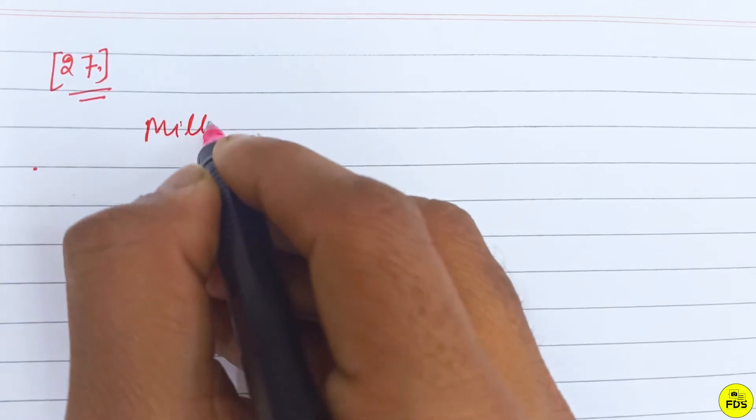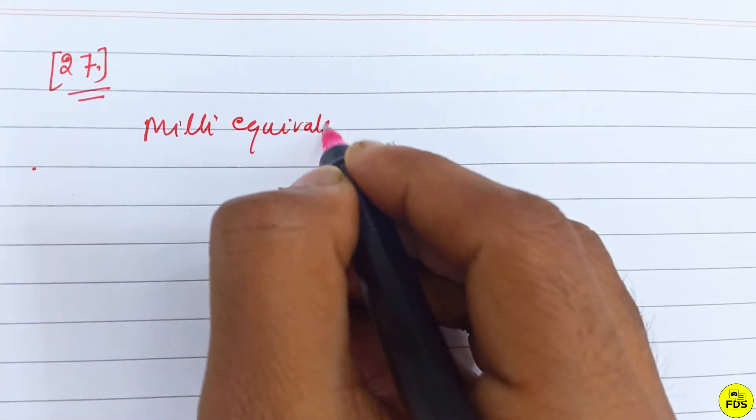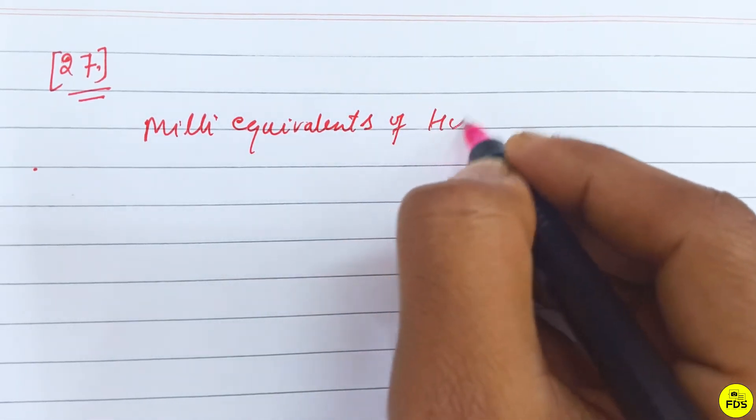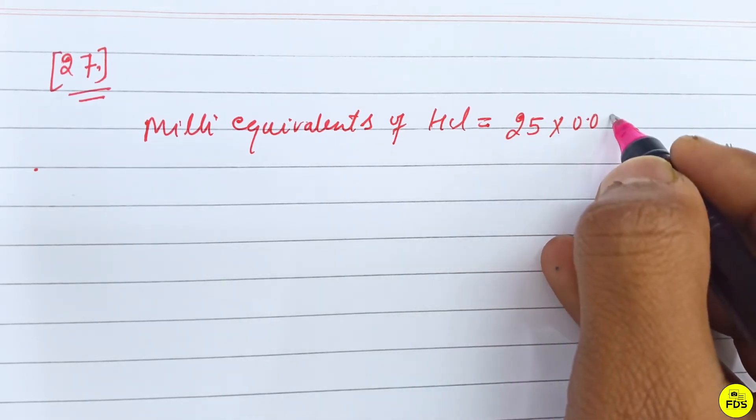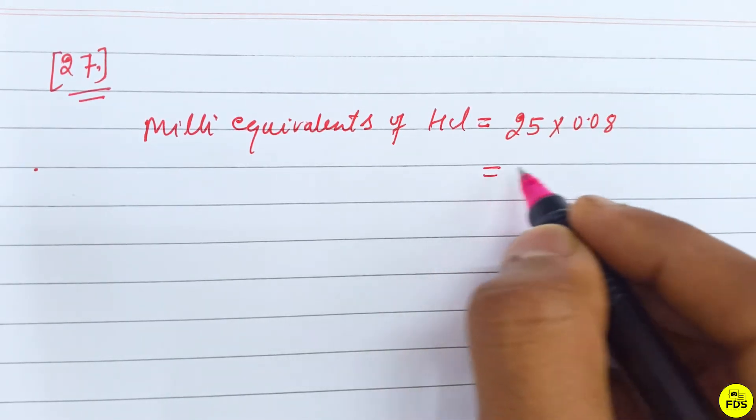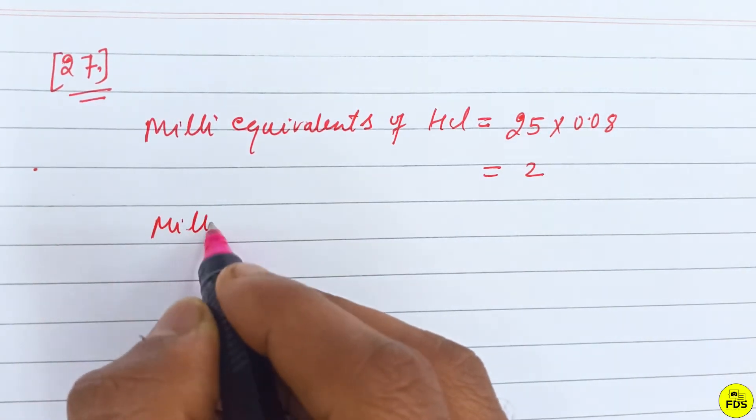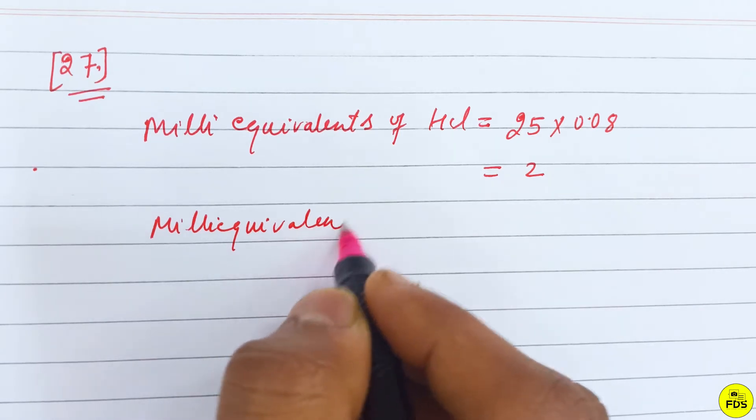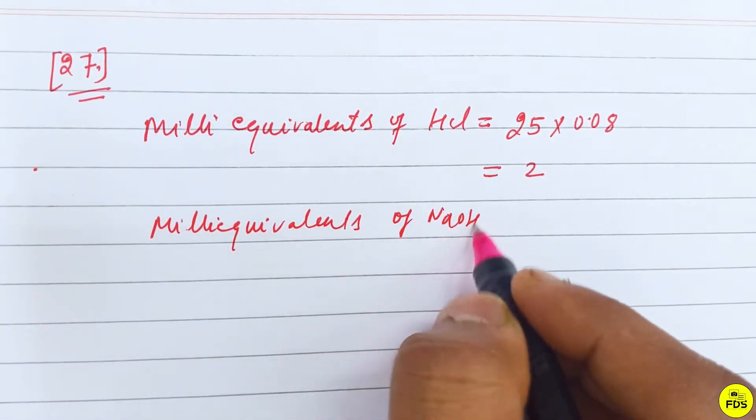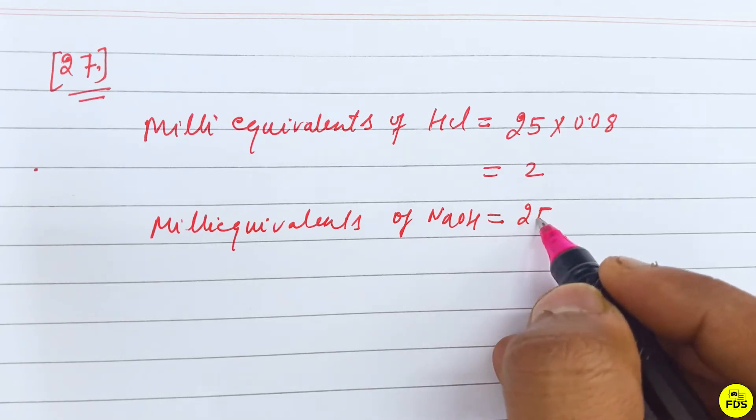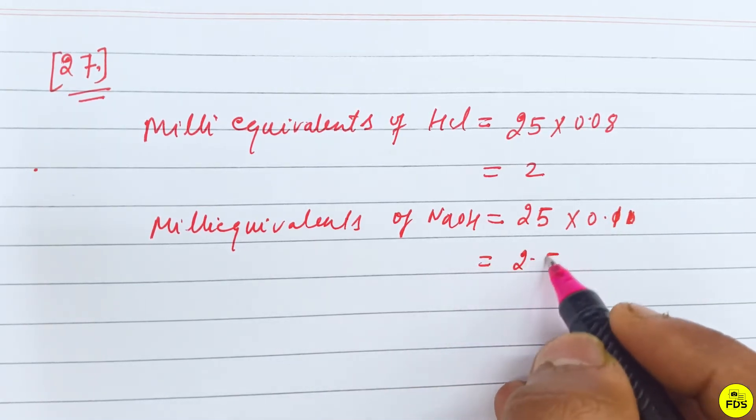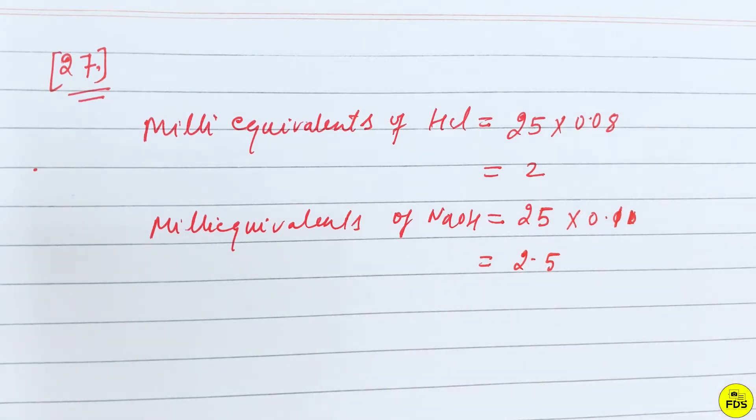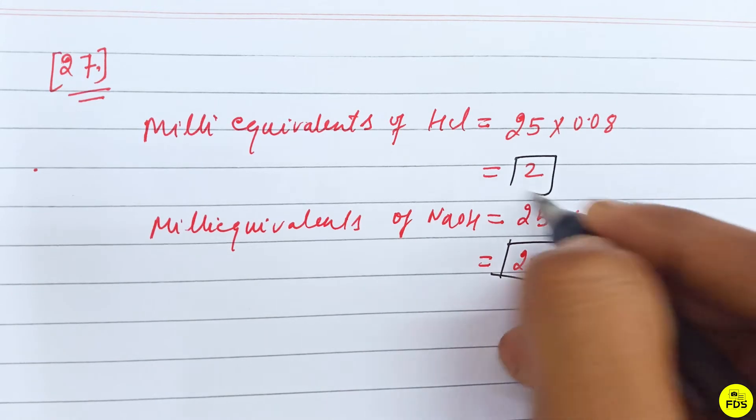Milliequivalents of HCl equals volume times molarity: 25 times 0.08 equals 2. Milliequivalents of NaOH equals 25 times 0.10 equals 2.5.